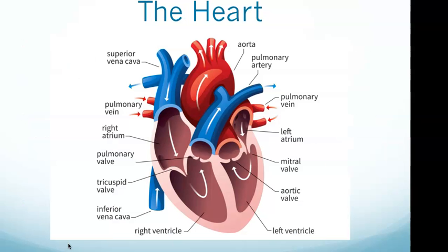We start off looking at the heart. The four muscular chambers of the heart are the right and left atria and the right and left ventricles. At the bottom you can see the right ventricle and the left ventricle, and the right and left atrium are more in the middle. On the left side of the diagram you see the right atrium, and on the right side you see the left atrium.